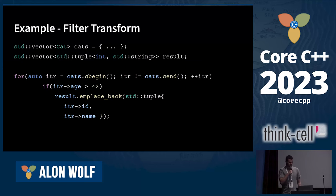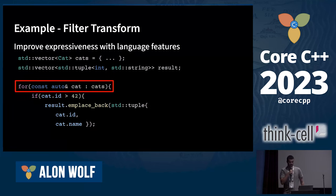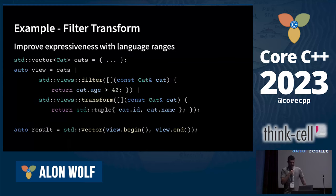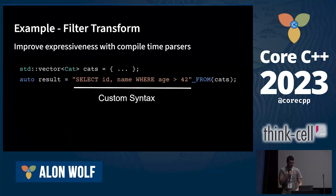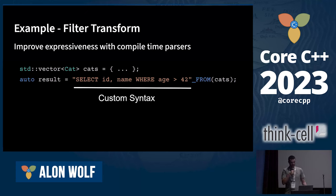Let's do a quick recap with a filter-transform example. Here we have a vector of cats and code that returns the IDs and names of all the cats over the age of 42. One way to make our code more expressive is to use a range-based for loop. But this is 2023 and we have ranges now, so the body of the function literally says filter-transform and we can chain operations using the pipe operator. But what if we wanted to write in an SQL-style syntax? Now our code is just a single line that clearly expresses its purpose.